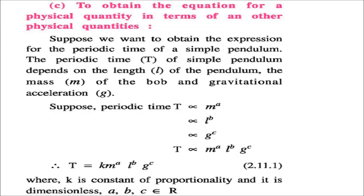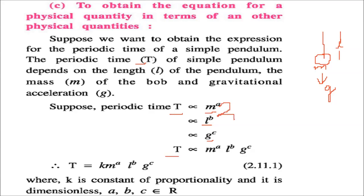To derive an equation for a physical quantity using dimensional analysis: suppose we want the expression for the periodic time T of a simple pendulum, which depends on length L, mass of the bob M, and gravitational acceleration G. We write T ∝ Mᵃ Lᵇ Gᶜ, and introducing a constant K: T = K Mᵃ Lᵇ Gᶜ, where A, B, C are real numbers to be determined.